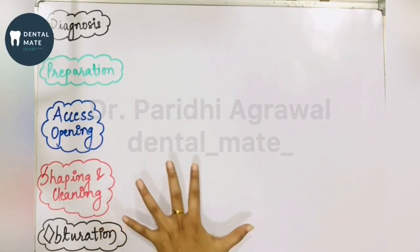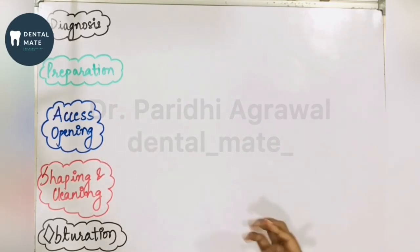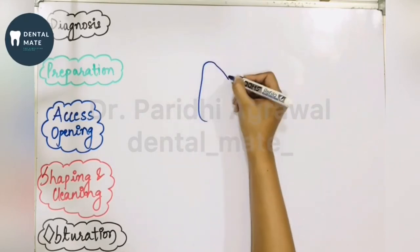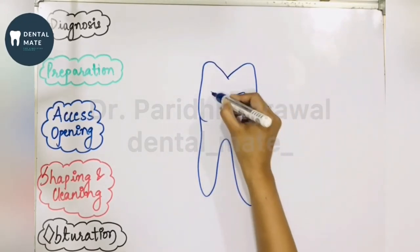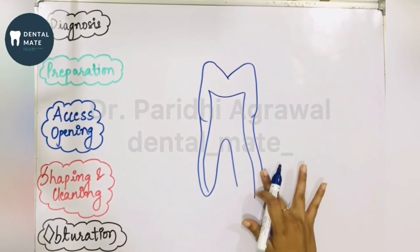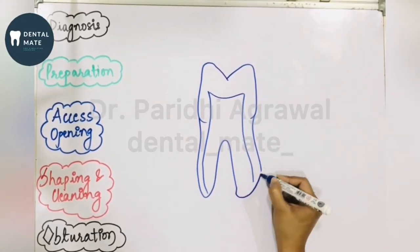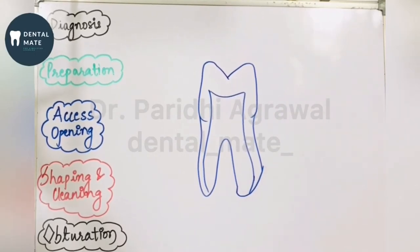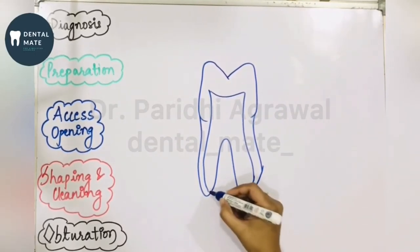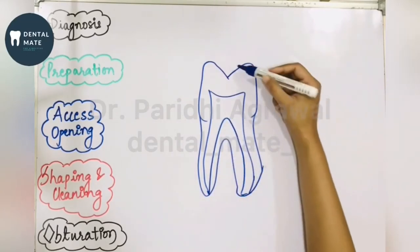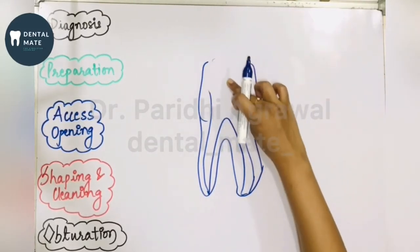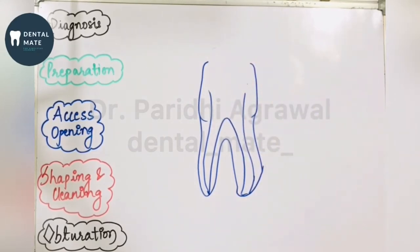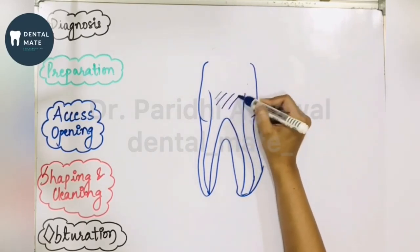The first step is access opening. Access opening means we need to gain access to the pulp of the tooth. We will be removing the necessary portions and then gaining a straight-line access. Along with access opening, there has to be removal of the coronal pulp.